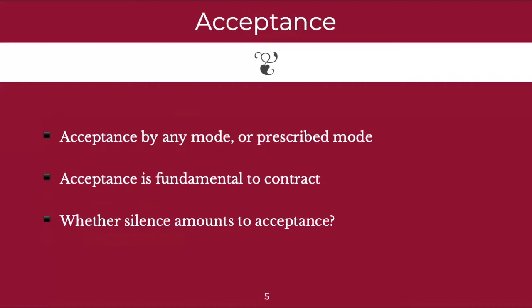The next aspect we're going to see under the Indian Contracts Act is acceptance. Now, once an offer is made, in order to make a legally binding contract, the offeree must accept the offer. This acceptance can be made in any mode — it can be written or it can be oral. The written acceptance could be through a letter or through an email, and the oral acceptance could be by word of mouth or through an agent. However, there is one exception to this rule: if the offerer makes it clear that acceptance must be made in one specific mode, such as by email, then only an acceptance made by email is considered to be legally valid, and no other acceptance made through another mode will be considered legally binding.